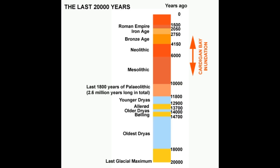So before I begin, I want to explain this timeline. It shows different historical eras: the Mesolithic, Neolithic, the Chalcolithic or Copper Age covering about 2000 years spanning the late Neolithic and early Bronze Age, then the Bronze Age, Iron Age, the Roman era, and the present age.